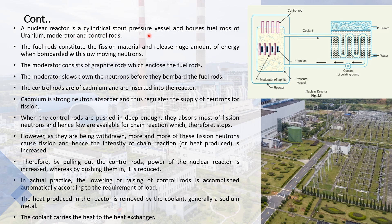The nuclear reactor is a cylindrical stout pressure vessel that houses fuel rods of uranium, a moderator, and control rods. The fuel rods constitute the fission material and release a huge amount of energy when bombarded with slow-moving neutrons. The moderator consists of graphite rods which enclose the fuel rods; it slows down the neutrons before they bombard the fuel rods. The control rods are made of cadmium and are inserted into the reactor. Cadmium is a strong neutron absorber and thus regulates the supply of neutrons for the fission.